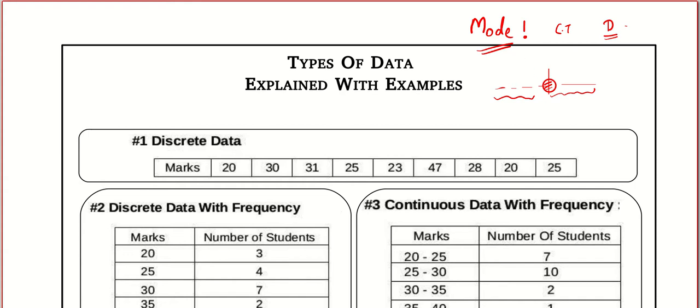Mode means the most repeated value in the data. Mode is used in the ready-made industry — for example when they produce ready-made shirts, shoes, phones, or laptops. These are all mass-produced goods. In order to maximize profit they must know the size most demanded by customers, to produce garments, shoes, phones, and laptops in such a way that the maximum number of people will be benefited.